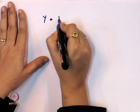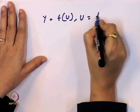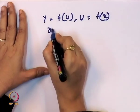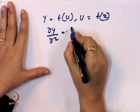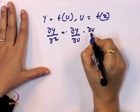Now we look at the last category — the derivative of a function of a function (chain rule). We have discussed constant functions, power functions, sum and difference functions, product functions, and quotient functions. Now we discuss a function where y = f(u) and u = g(x). In this case, dy/dx = (dy/du)·(du/dx).